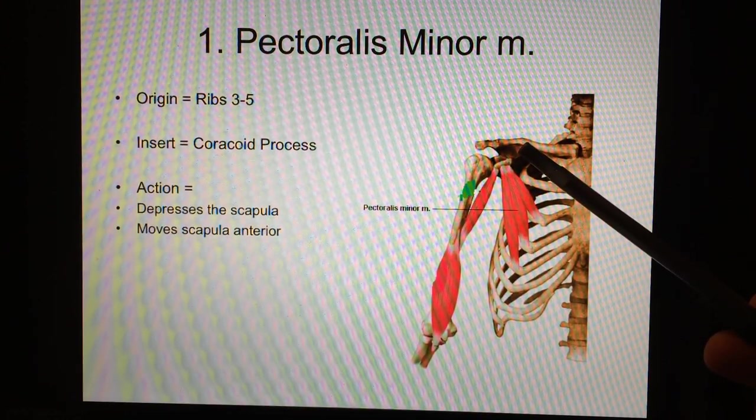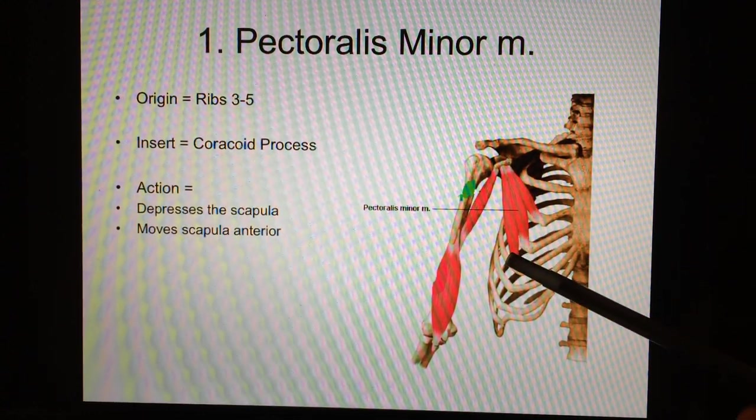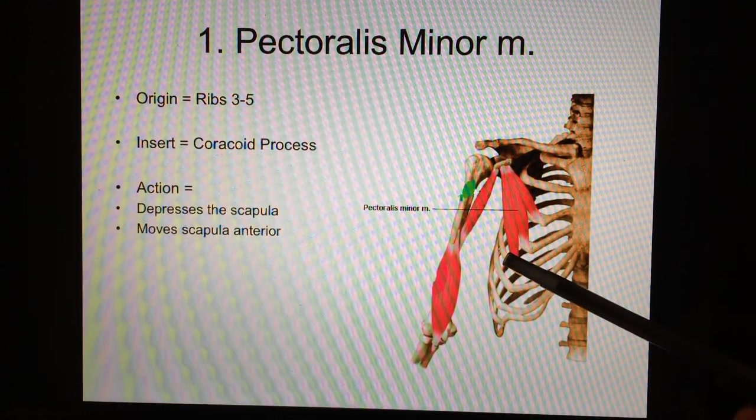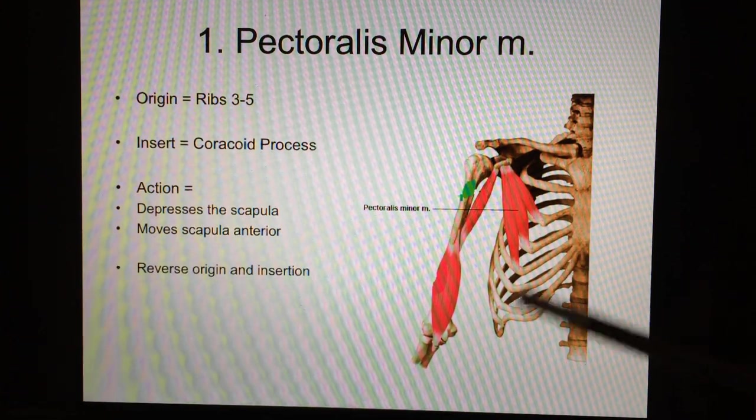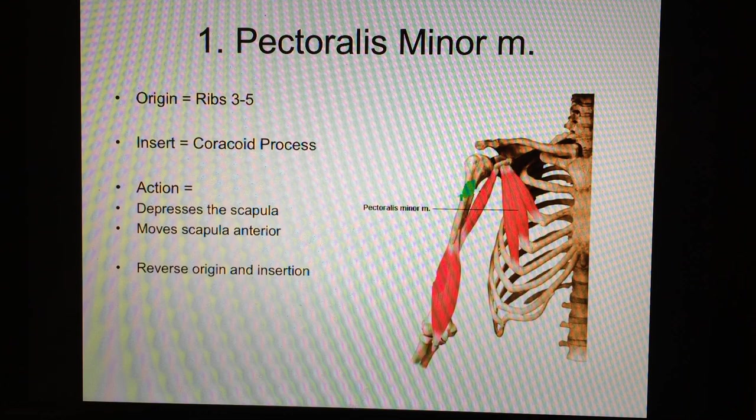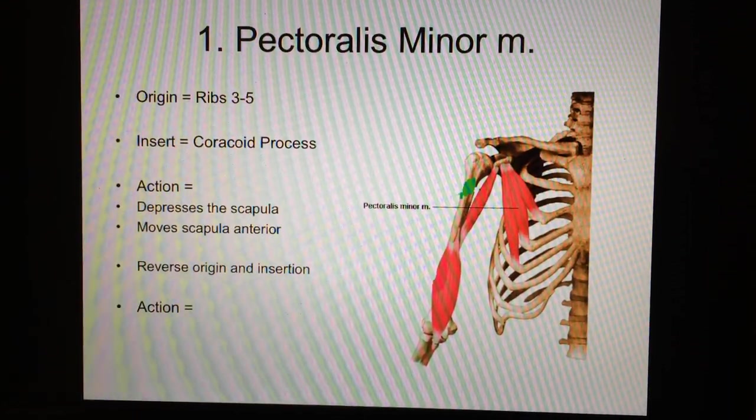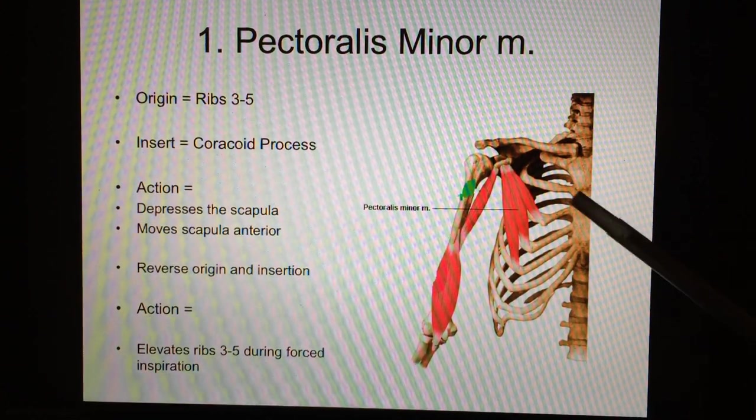That's why if you want to use the scapula as an origin, what do you need? Fixators. Well, these are all in place. So watch. If we lock the scapula, then this becomes the origin and this becomes the insertion. You can reverse the origin insertion on any muscle that's directly attached to the scapula. It can do other things. It's pretty cool.